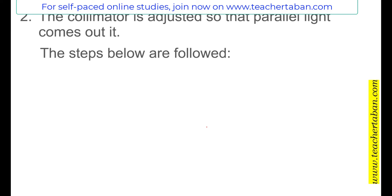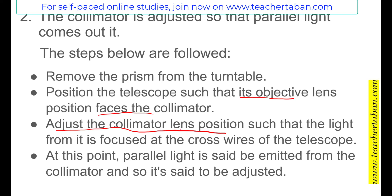In order to adjust the collimator, the aim is to make sure that the collimator is giving out a parallel beam of light. To do this, we adjust the collimator lens position. In doing so, the aim is to make sure that we see the cross wires of the telescope clearly. If you can see the cross wires clearly, then since we already know that the light entering the telescope is parallel, it means that the collimator is now producing a parallel beam — and therefore the collimator is adjusted.